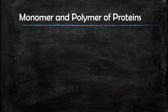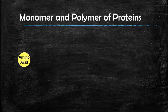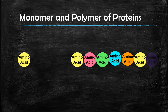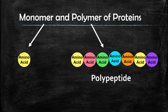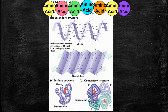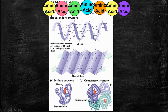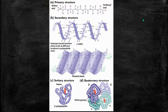Now let's move on to protein. The monomer of proteins is an amino acid, and the polymer is a chain of amino acids called a polypeptide. Proteins fold up in a series of steps, and the ultimate protein structure depends on how many amino acids were in the chain, the order or sequence of amino acids, and that determines how it folds up into its overall shape.